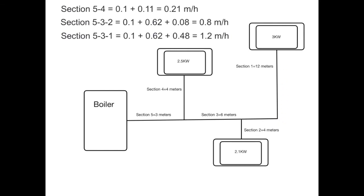The pressure loss figures through each circuit show that the biggest pressure loss is in fact through section 5-3-1, which equates to 1.2 meters head. Therefore the most resistive path in this system is section 5-3-1, and that circuit is going to be our index circuit.